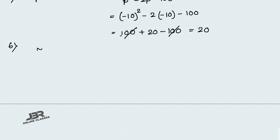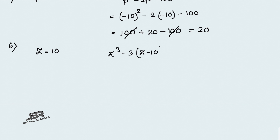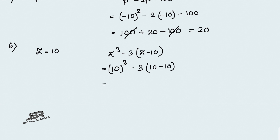Sum number 6: if z equals 10, find the value of z³ minus 3 into (z minus 10). So z³ means 10³ equals 1000. Then 3 into (10 minus 10) equals 3 into 0 equals 0. So your answer is 1000.